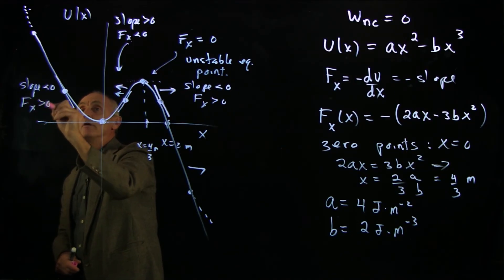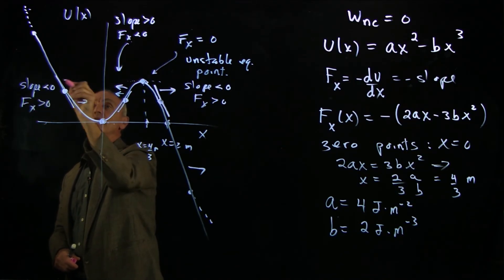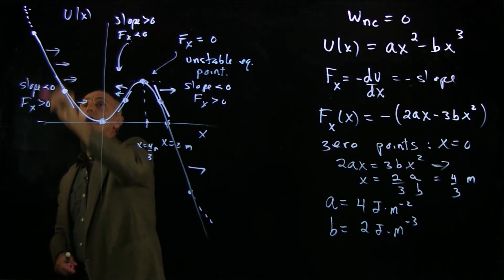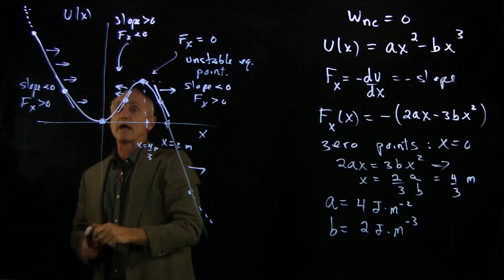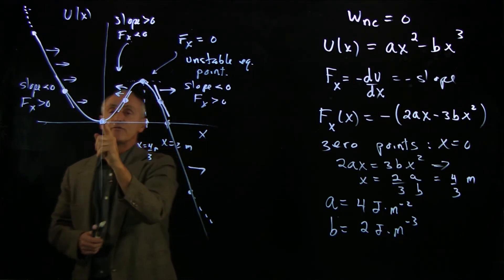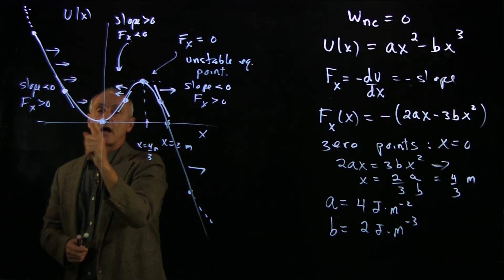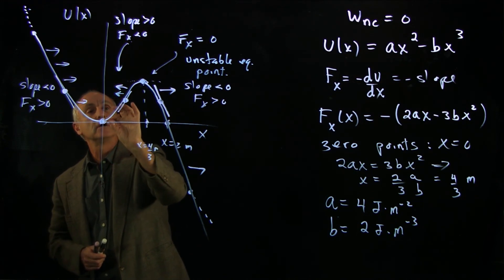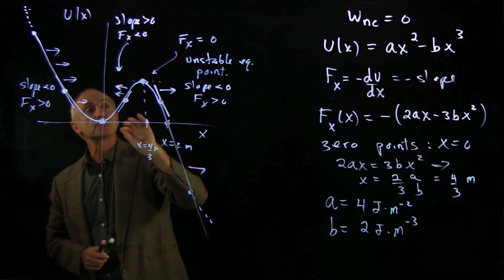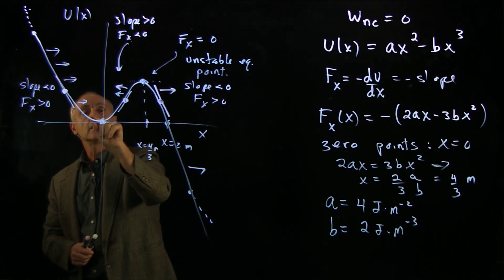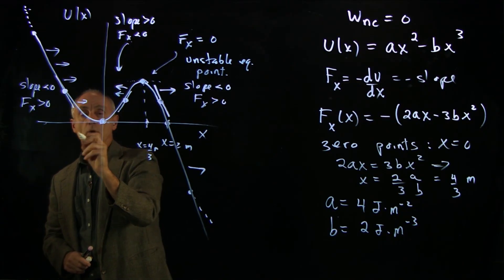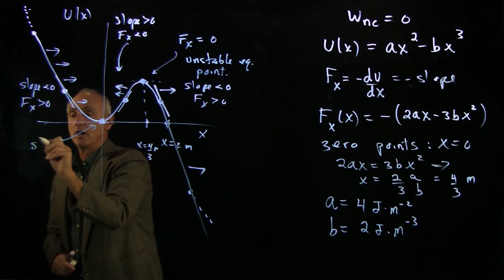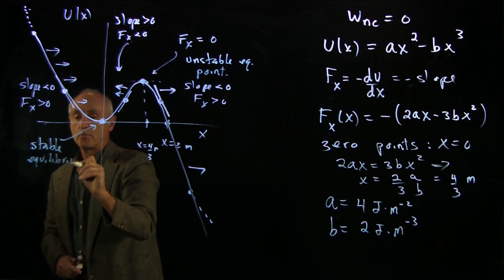Everywhere on this side, the particle is getting a restoring force back to equilibrium. If we displace this particle just on either side, if it doesn't have enough energy to get over this point, then the particle will stay around this area. That is why we give this the name of stable equilibrium point.